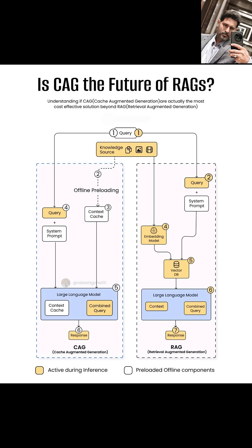However, it's important to note that CAG might have its own limitations. Effectively preloading and maintaining a relevant context cache requires careful planning and understanding of the expected queries and knowledge needs. If the queries are highly diverse and unpredictable, keeping the cache up-to-date and relevant could be challenging. In essence, RAG performs retrieval in real-time for each query, while CAG aims for efficiency by pre-computing and caching relevant context offline for faster access during inference. The question of whether CAG is the future of RAG likely depends on the specific use cases. Thanks for watching, and I'll catch you in the next one.